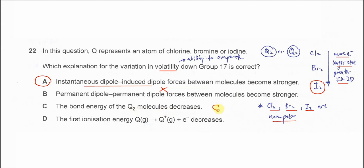Bond energy is not about how volatile it is. The volatility depends on the intermolecular force, but not the covalent bond. So therefore, this one is not a good explanation.